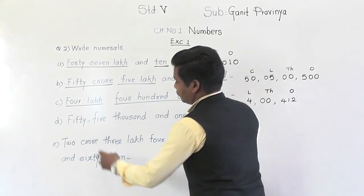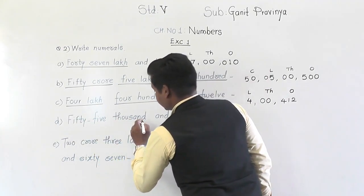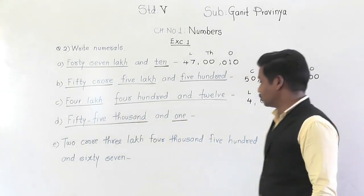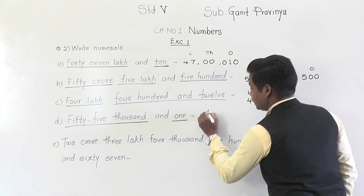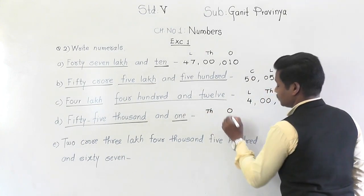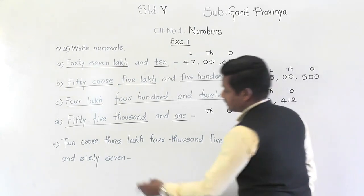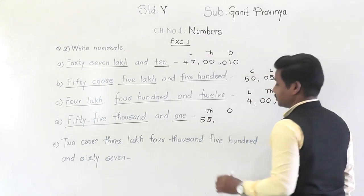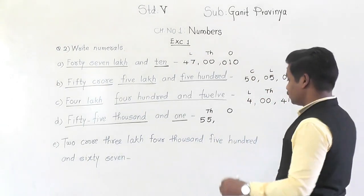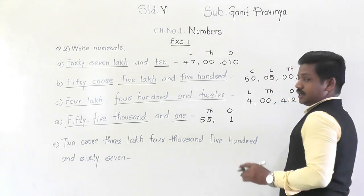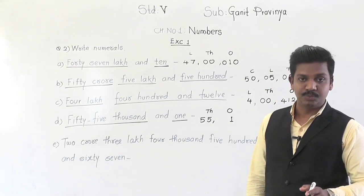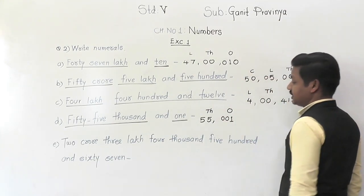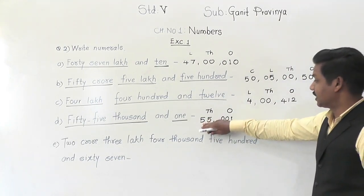Next: 55,000 and 1. There are only two groups — starting with thousands, then ones. In the thousands group there is 55 — write 55. In the ones group there is only 1, but the ones group has three places: ones, tens, and hundreds. So write 001. The numeral is 55,001.